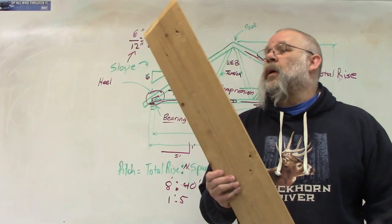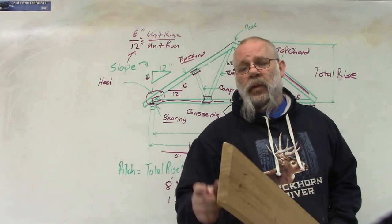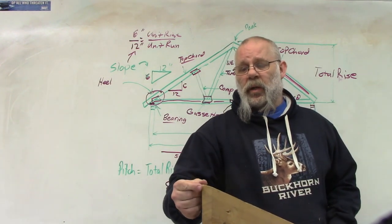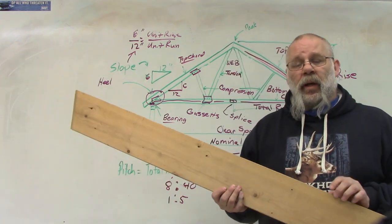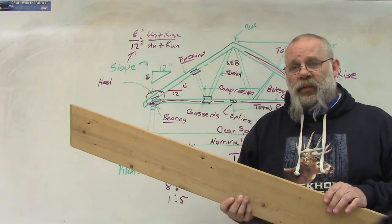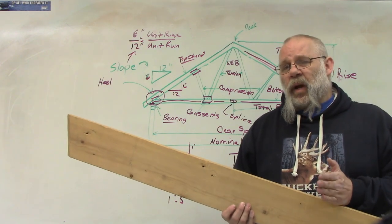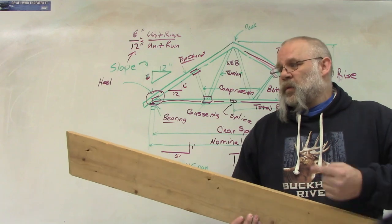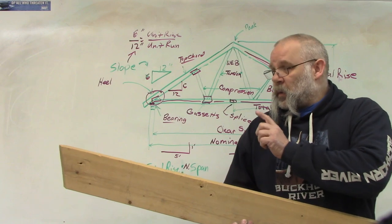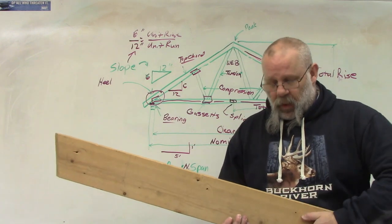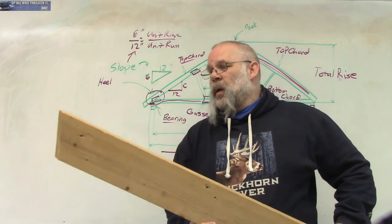This one is a hip rafter. It has this double cheek cut at the top and it has a bird's mouth at the bottom. That's how you identify a hip rafter. Now in a hip valley roof, the hip and valley rafters are cut the same, so this could be a valley rafter also because it'd be cut exactly the same — double cheek cut at the top and a bird's mouth at the bottom.